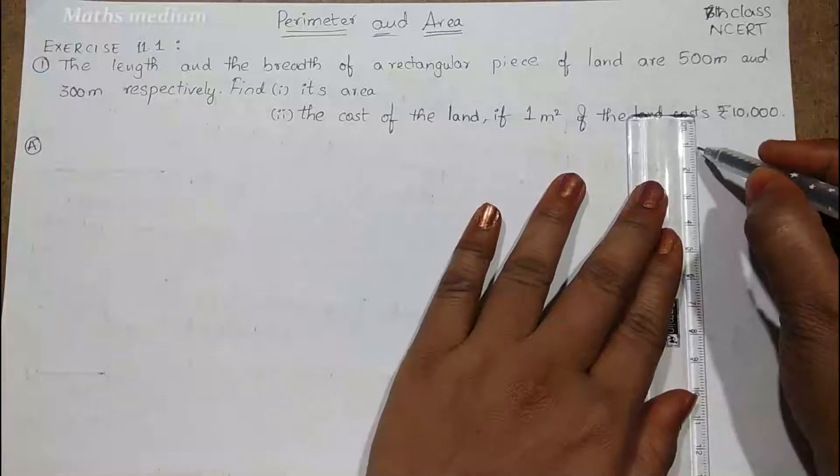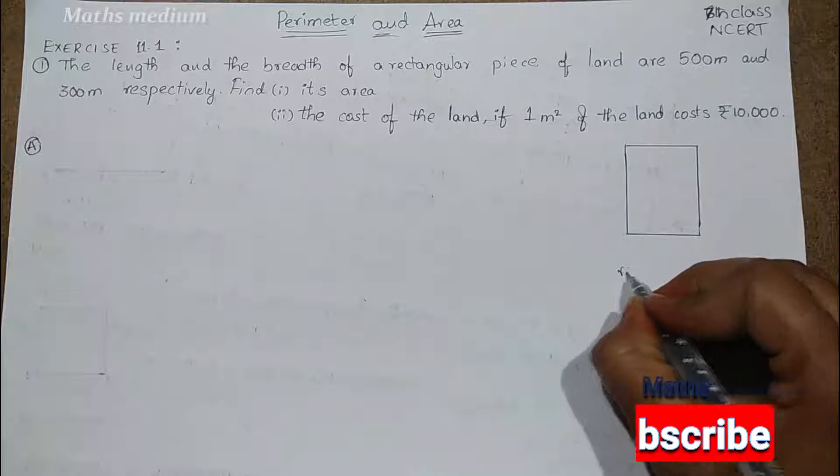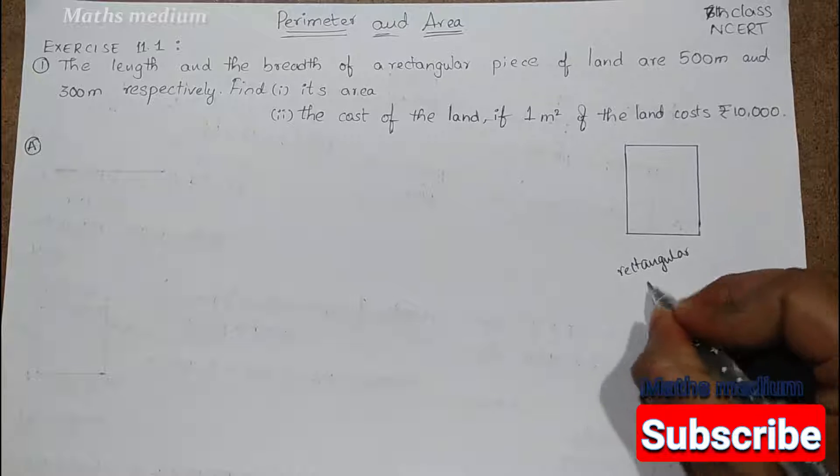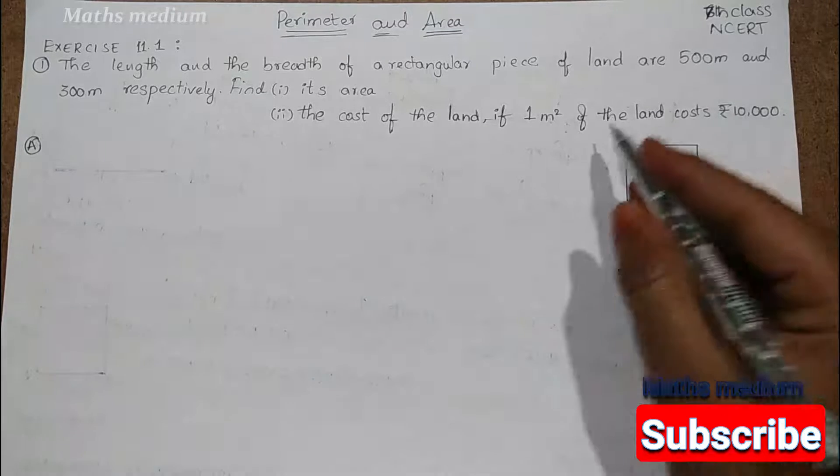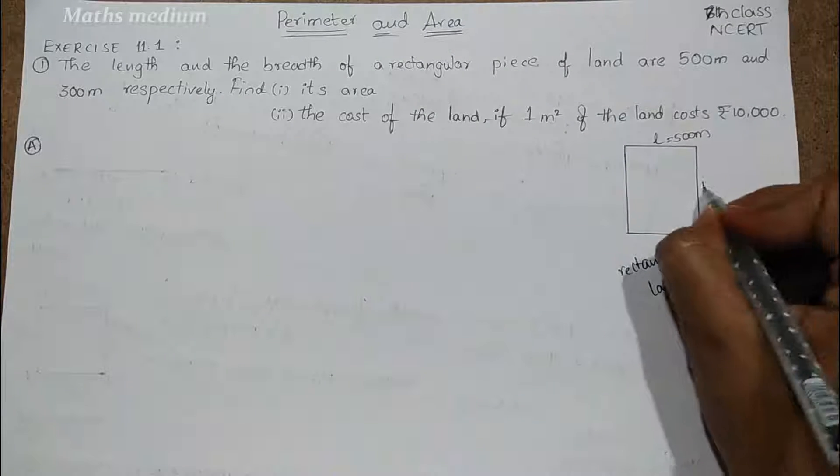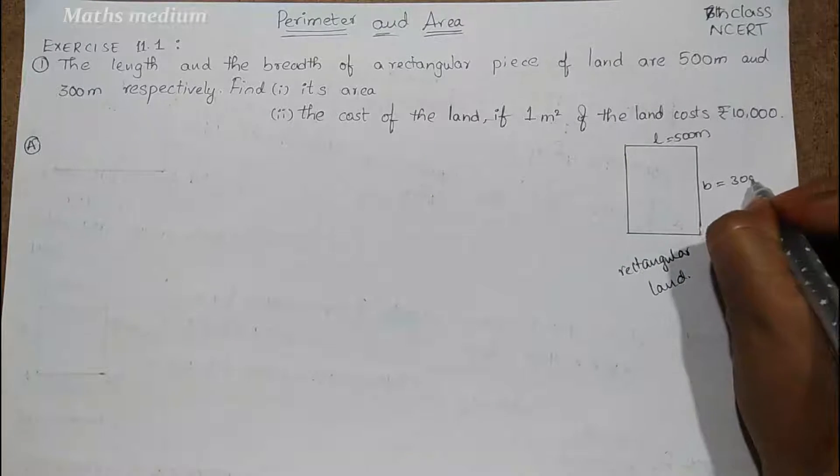So if you take a rectangular field here, this is the rectangular land. Its length is equal to 500 meters and breadth is equal to 300 meters.